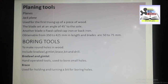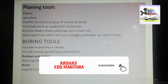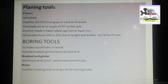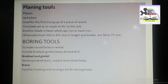For the metal jack plane, the cutting blade is also set at an angle of 45 degrees to the sole. On top of the cutting blade is another blade called the cap iron or back iron. The back iron does not cut, but stiffens the blade at the cutting edge to prevent forward chattering, and partially breaks and curls the shaving as it is made.